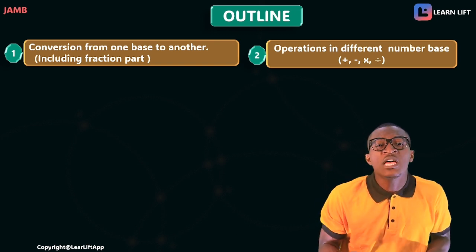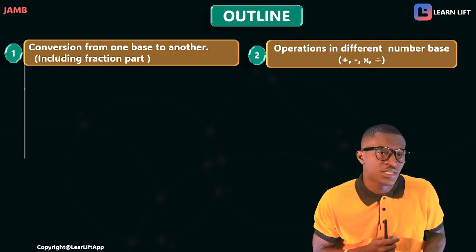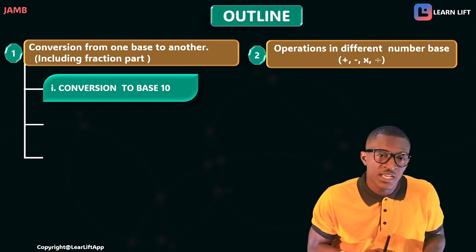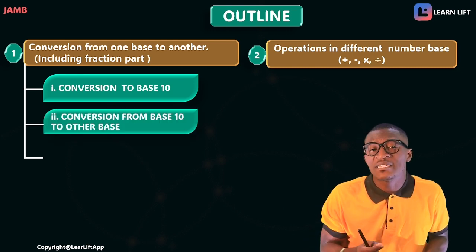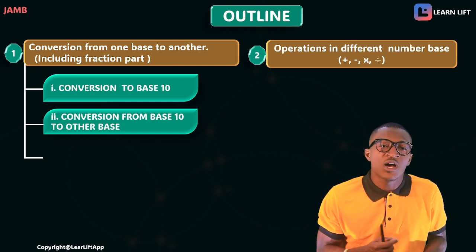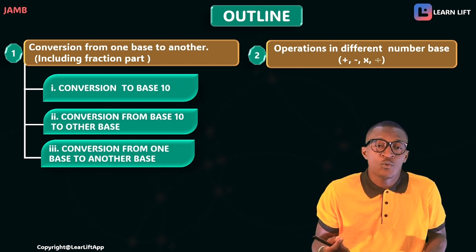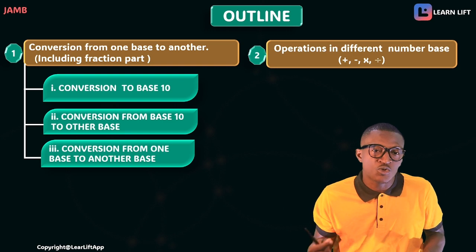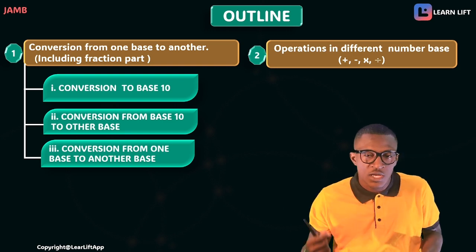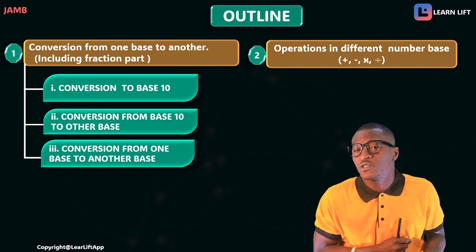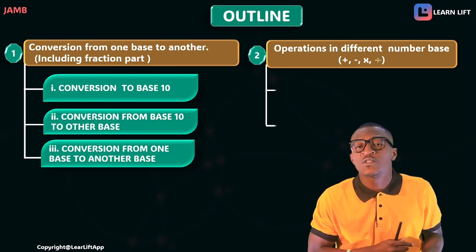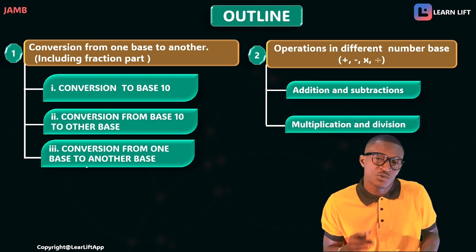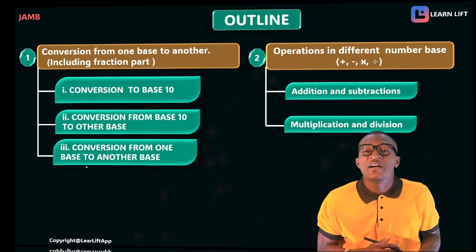Under conversion from one base to another, we'll learn three things. Number one: conversion to base ten. Number two: how to convert from base ten to other bases. Number three: how to convert from one base to another — for example, from base five to base six — but to do that you must first convert to base ten. Under operations, we'll learn addition, subtraction, multiplication, and division.